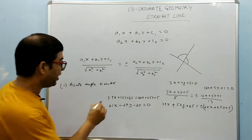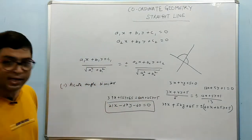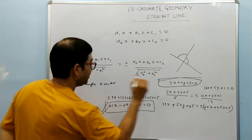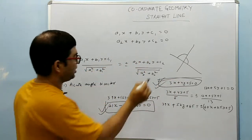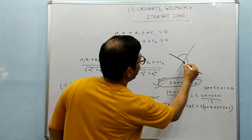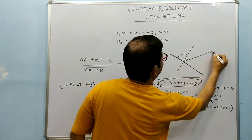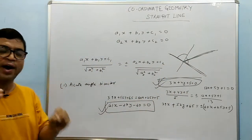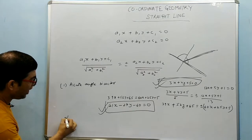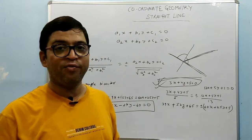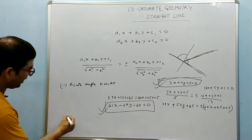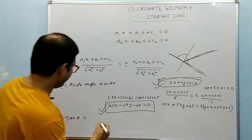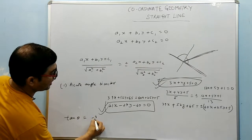To identify which bisector is the acute angle bisector, pick one bisector and one of the original lines. Suppose I pick this bisector and this line. In the figure, this is the line and this is the bisector. I find the angle between them using the formula: tan theta equals m1 minus m2 divided by 1 plus m1 times m2. The slope of the line 3x plus 4y plus 5 equals 0 is minus 3 over 4.